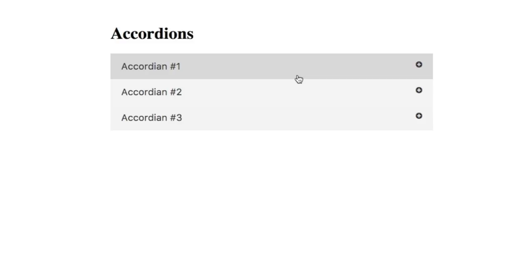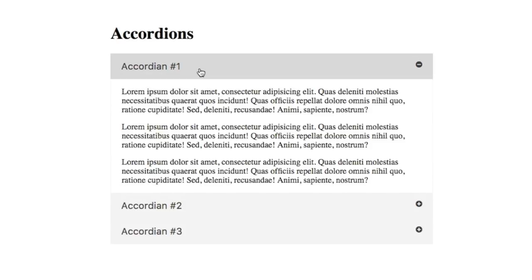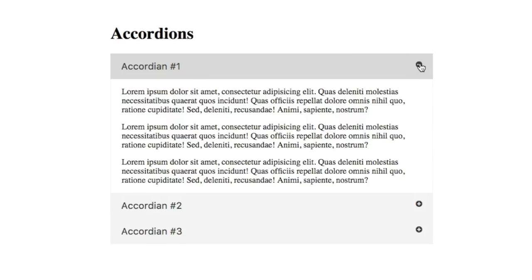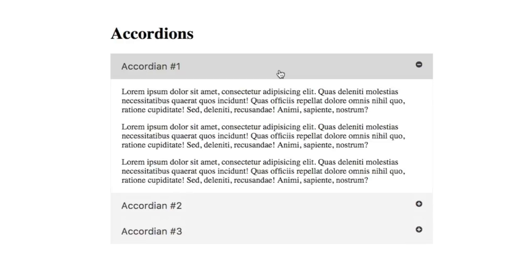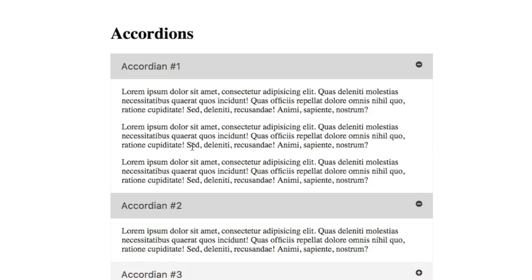You can see here the final project we'll be creating today. We have as many accordion menus as you want — three here. As you hover over it and click, it opens up with a nice sliding animation. There's also a minimize, and the plus/minus icon changes as well. It works really well, fits any type of content — you can put whatever HTML you want inside. You guys are going to be shocked by how simple it really is, and we'll go through this nice and methodical.